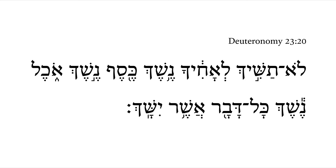Deuteronomy 23:20. This verse has a lot of 'nashach' going on. Verse 20 starts a new section, with the next two verses dealing with lending — lending on interest particularly. We'll fill out that context in verse 21 in the Hebrew Bible, which is verse 20 in the English Bible.